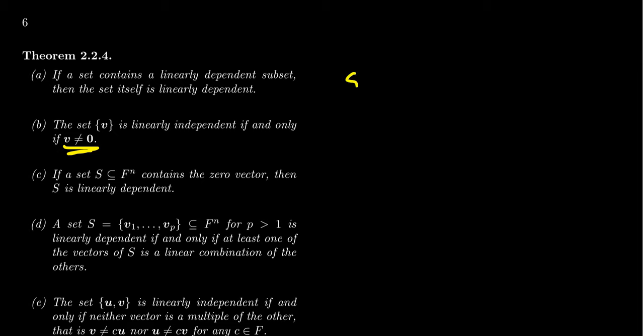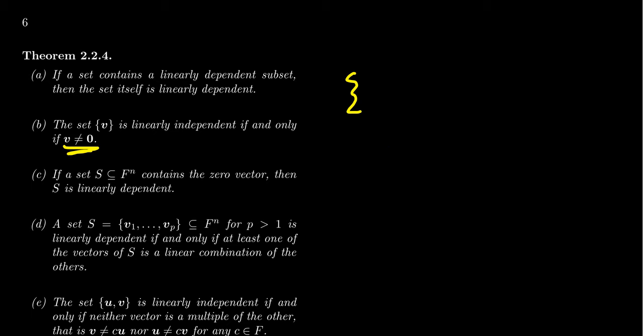The empty set is actually a linearly independent set because there's no dependence relationship. It's a funky little thing—there's no way of combining vectors to give you zero in a non-trivial way because there are no vectors to combine. The empty set is considered linearly independent. A single vector is independent as long as it's not the zero vector.